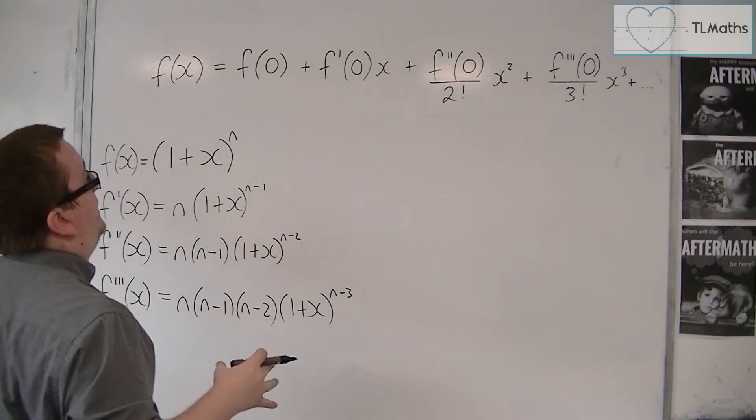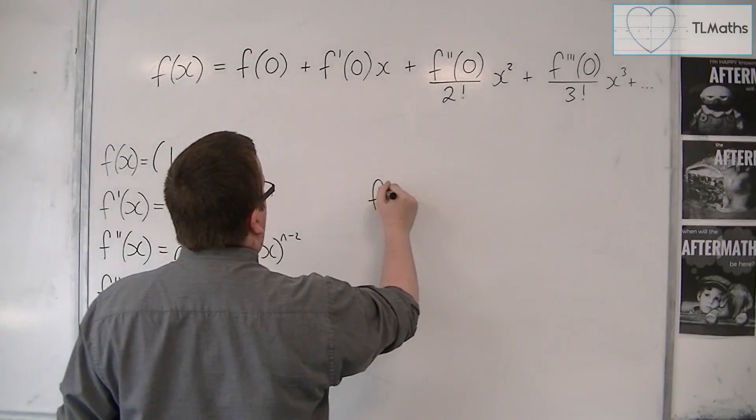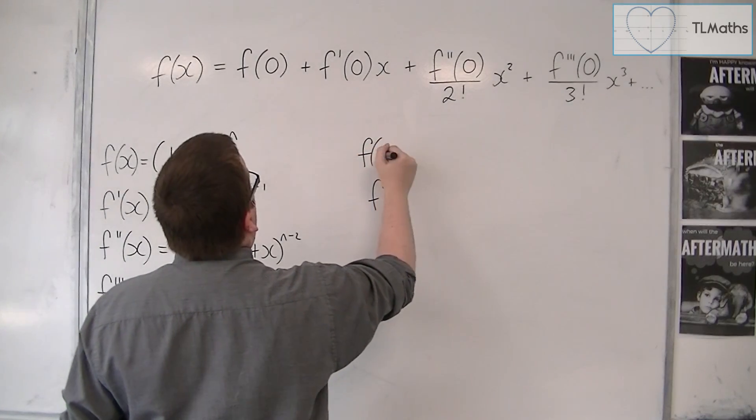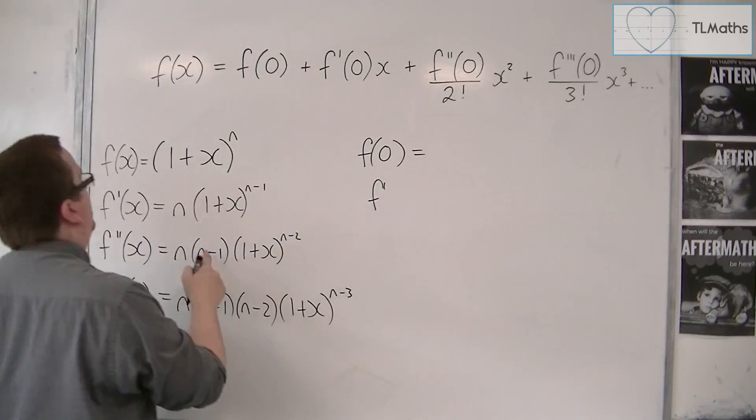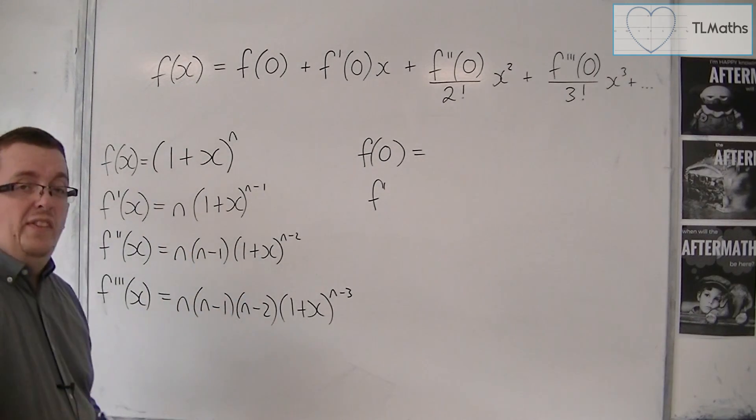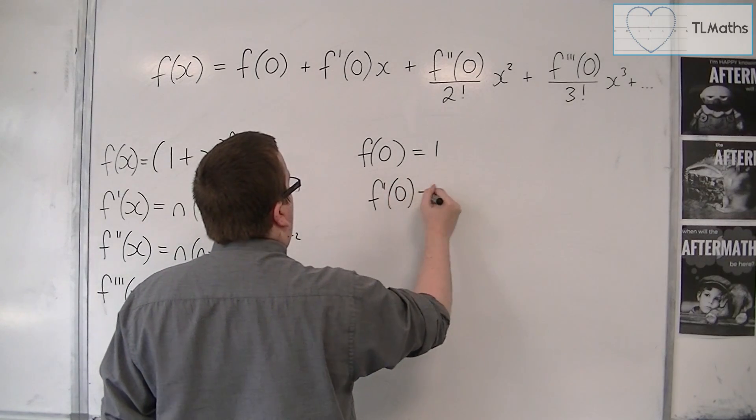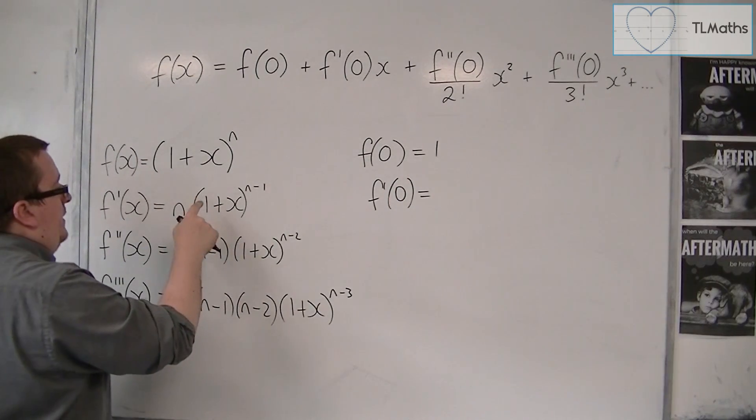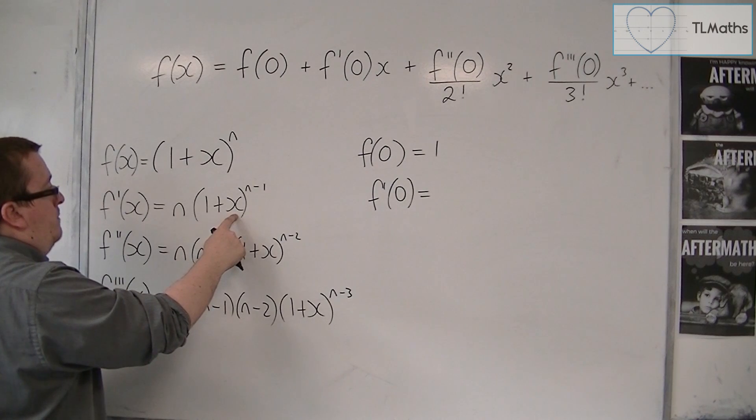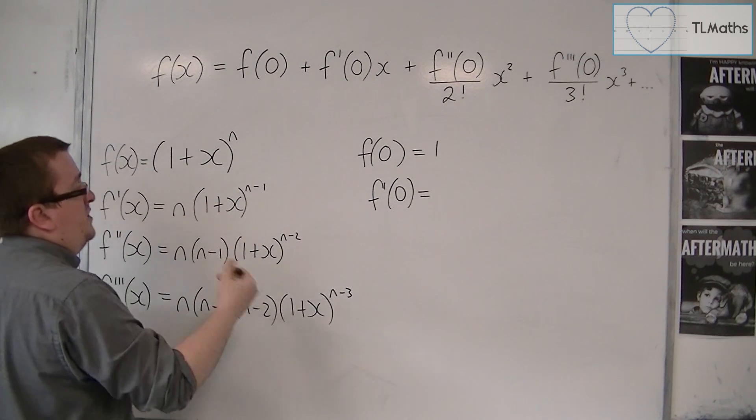And then we're going to need to evaluate it at 0. So we're going to need f of 0 to start off with. So f of 0 is 1 plus 0 to the n. And so 1 to the n is just going to be 1. f prime of 0 is, well, x is 0. So we have 1 to the power of n minus 1. So that's just 1. And so that's just n.